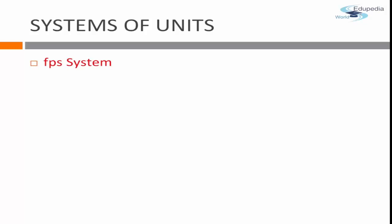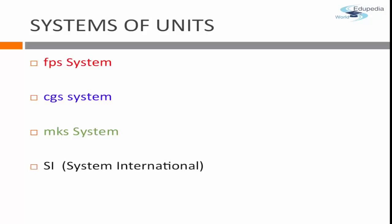The three systems of units are: the FPS system (foot for length, pound for mass, second for time), the CGS system (centimeter, gram, second), and the MKS system (meter, kilogram, second). We also have the SI system — Système International — which is essentially an extension of the MKS system and is recognized by the International Society of Physicists as the worldwide standard.